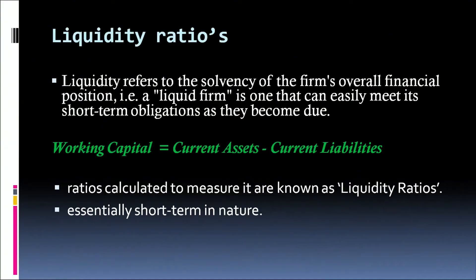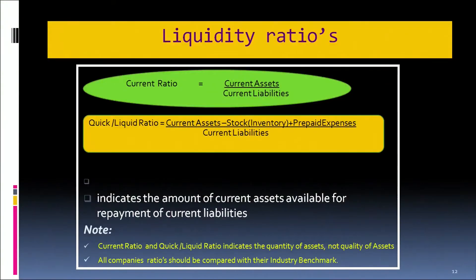Working capital is defined as current assets minus current liabilities. In the liquidity ratio, we are looking at the proportion of current assets to current liabilities. We calculate current assets divided by current liabilities to get the current ratio. It indicates the amount of current assets available for the repayment of short-term obligations. The ideal ratio is 2:1, but we would always like to benchmark it with the industry or our competitors.